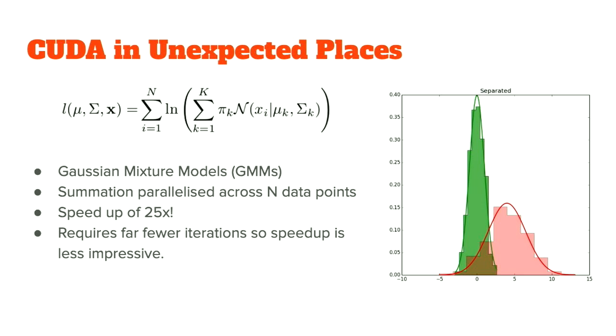EM is fundamentally unchanged — what we're changing is one of the expensive computations. We sped that up significantly, which speeds up the overall algorithm. EM has not been suddenly parallelized; EM is still sequential. GMMs tend to be much less expensive to train, so the speed up goes from a few hours to minutes, which is the same multiplier — but weeks to days feels a lot greater in terms of improvements.